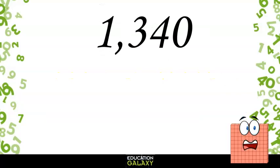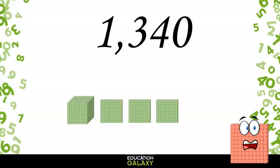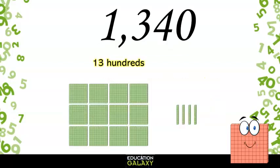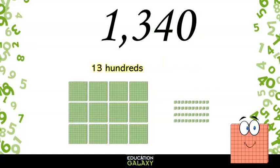Let's check out this number, 1,340. It's made up of 1,000, 3 hundreds, and 4 tens. But we can also break it up a couple of different ways as well. It can be 1,300 and 4 tens, or 1,300 and 4 ones. Each of these still give us 1,340, but broken up different ways using the number's place values.